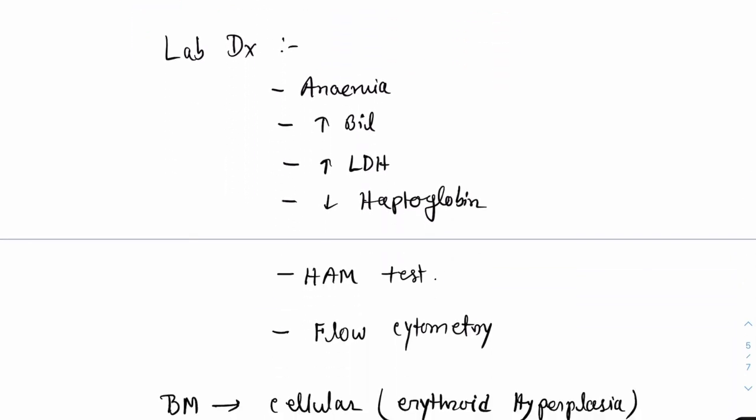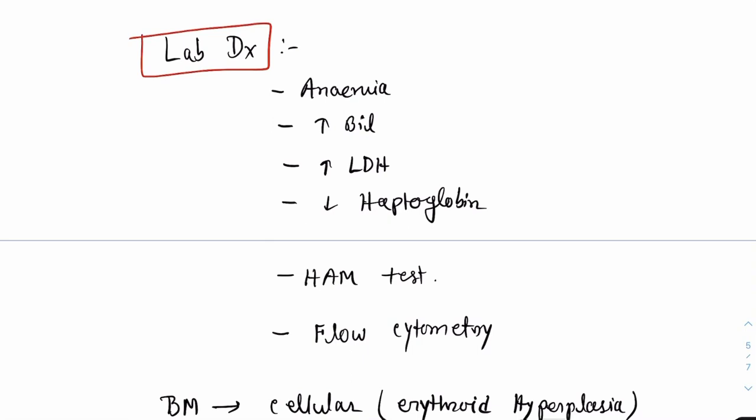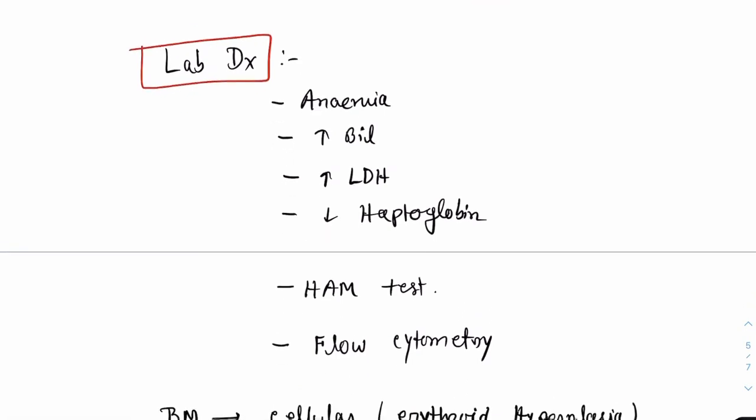Now, how to diagnose a case of PNH? In the blood, there will be anemia. Initially, the anemia is normocytic and normochromic but as the patient keeps on losing blood and due to iron deficiency, the patient will have microcytic hypochromic anemia in the later stage. There will be increased unconjugated bilirubin. The LDH will be increased in terms of thousands. There will be reduction or absence of haptoglobin.